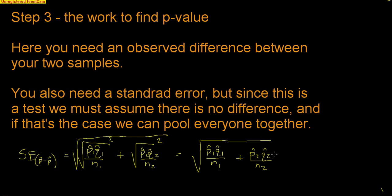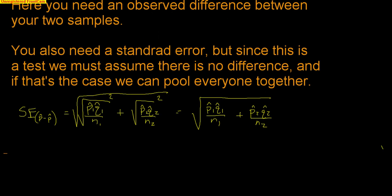There's an extra tricky thing in hypothesis tests: remember, our null assumes there is absolutely no difference. So in this type of problem, we actually want to pool everybody together. If there's no difference, why are we keeping two separate samples? We just put everybody together — that's how we find the standard error here. You only have to do this in hypothesis tests, not in confidence intervals.